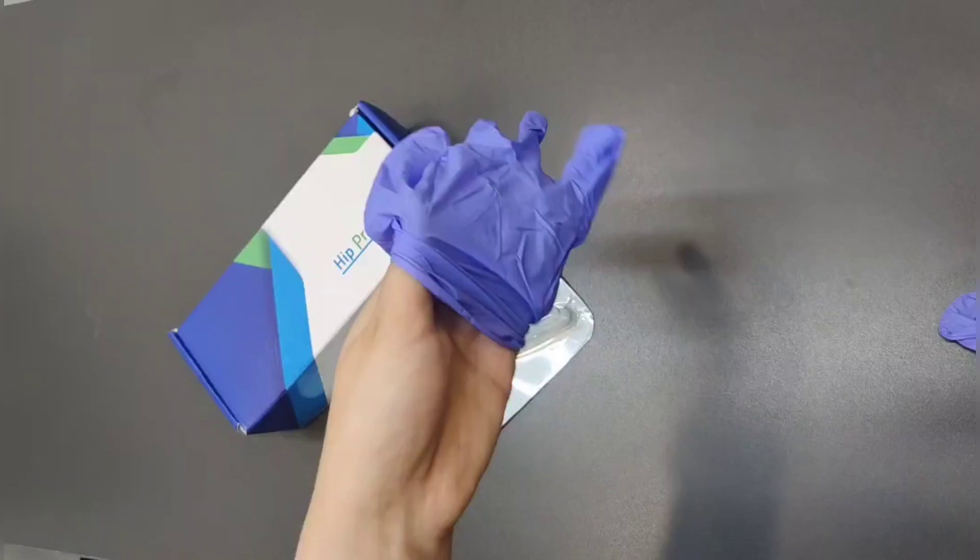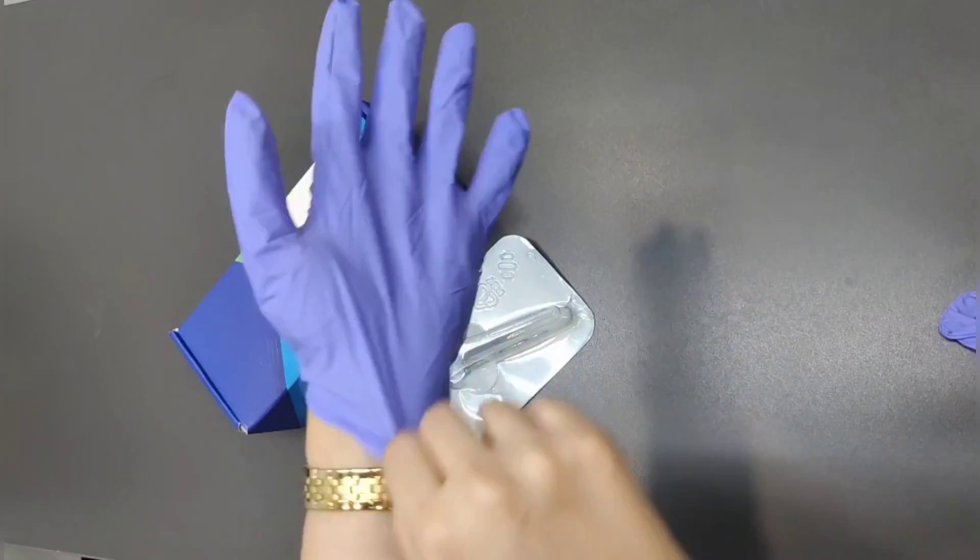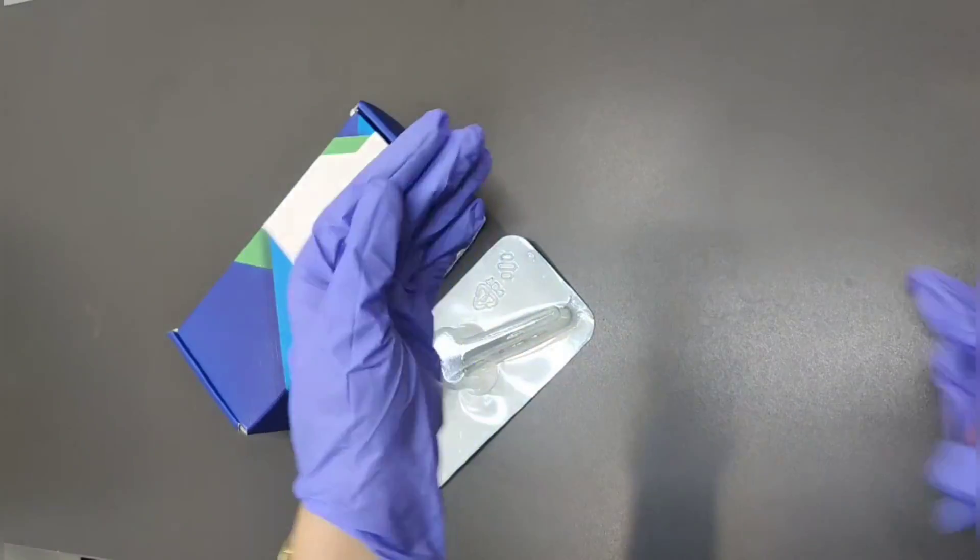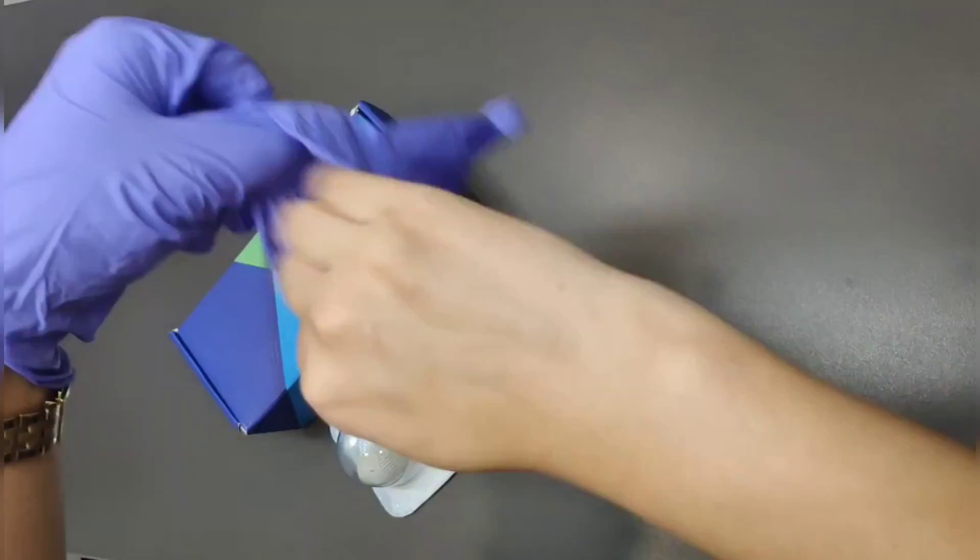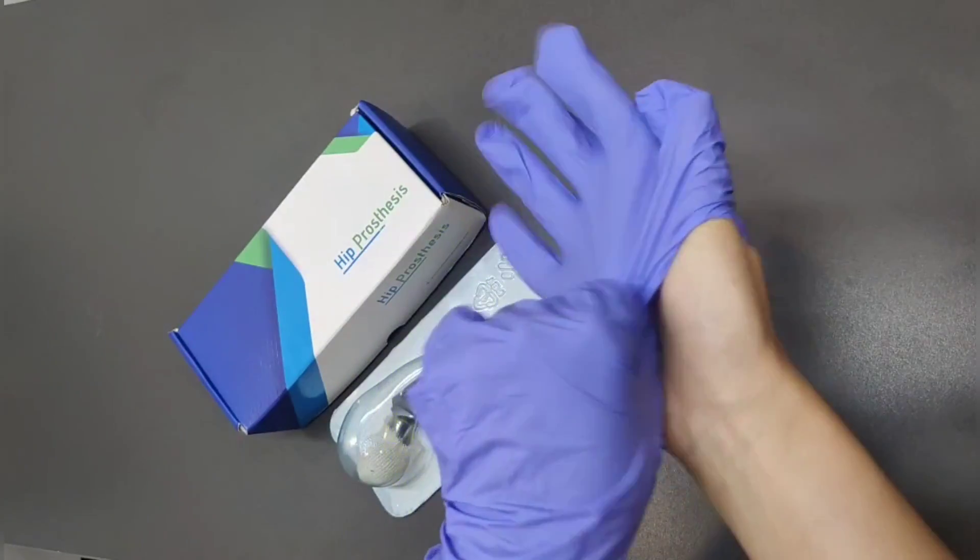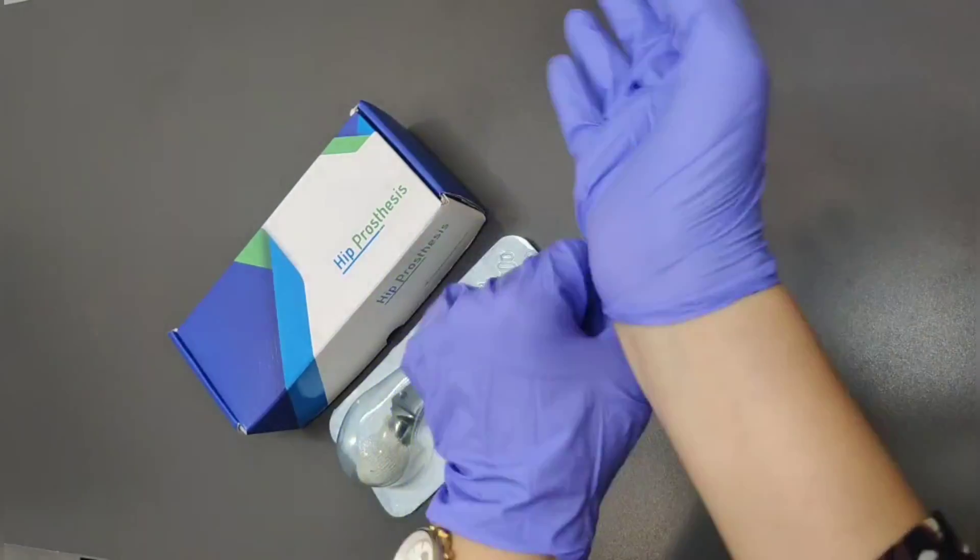Our Bipolar Hip Prosthesis comes in different sizes ranging from 37 mm to 53 mm. This ensures a tailored fit for each patient's unique needs.